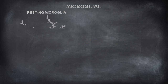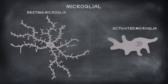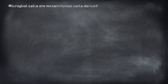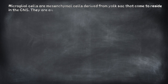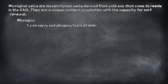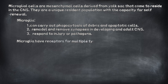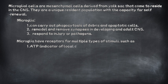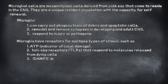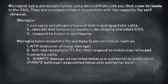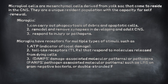Microglial cells are mesenchymal cells derived from yolk sac that come to reside in the CNS. They are a unique resident population with the capacity for self-renewal. Microglia can: 1. Carry out phagocytosis of debris and apoptotic cells, 2. Remodel and remove synapses in the developing and adult CNS, 3. Respond to injury or pathogens. Microglia have receptors for multiple types of stimuli, such as ATP (indicator of local damage), toll-like receptors (TLRs) that respond to molecules released from dying cells, DAMPs (damage-associated molecular patterns), and PAMPs (pathogen-associated molecular patterns), such as LPS on gram-negative bacteria or double-stranded RNA in viruses.